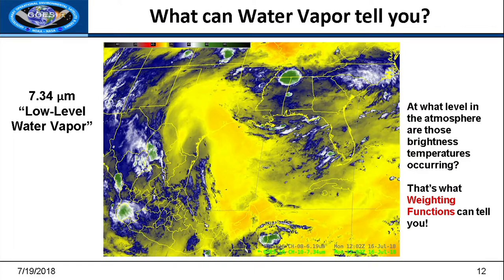You can do the same thing with the low-level water vapor as well. If I were to ask what level you're sensing in the atmosphere, it's hard to tell because it changes based on both the temperature and the amount of water vapor in the air. That's what weighting functions tell you — I touched on those yesterday and will go into more depth today.